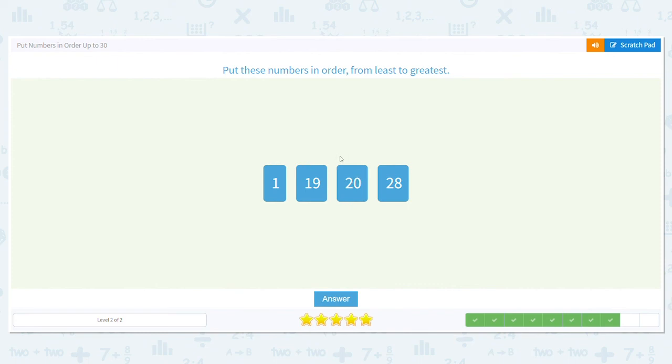So 1, 19, 20, and 28 is from least to greatest. Let's do one more. We have 13, 19, 5, and 3. What's my least? 3. What's my second least? 5. And then what comes next? 13 does, which means 19 is my greatest.